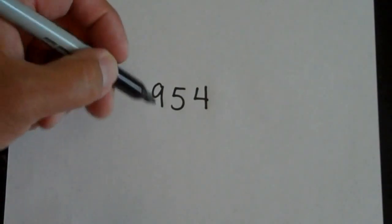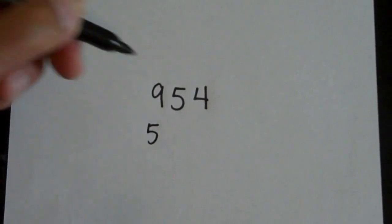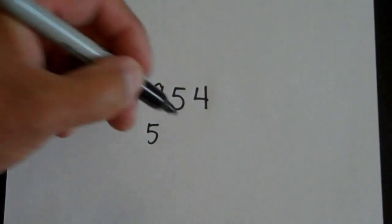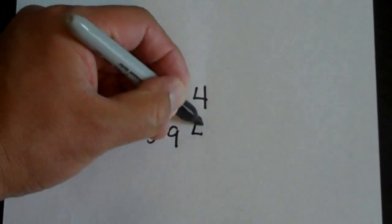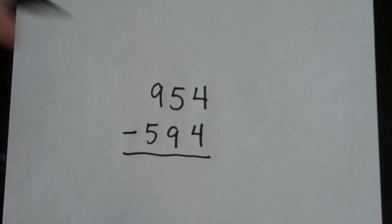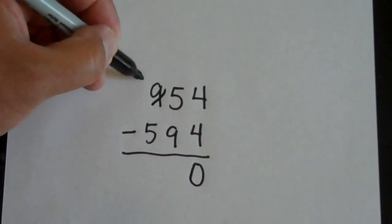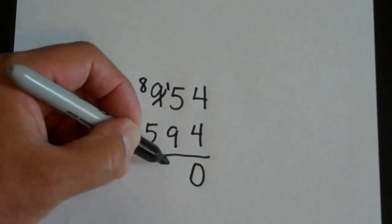Let's say the person changed their numbers to 594. And we subtract. We get 0. We'll borrow. And we get 360.